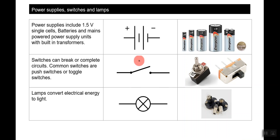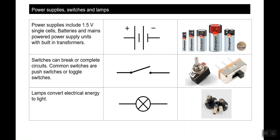Power supplies include 1.5-volt single cells, batteries, and mains power supply units with built-in transformers. The symbol for a battery has a positive terminal — the longer line — and a negative terminal — the shorter one. The battery is what produces and pushes electrons around the circuit, and that's where you get your voltage from.